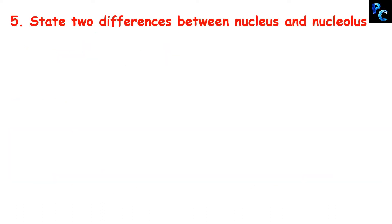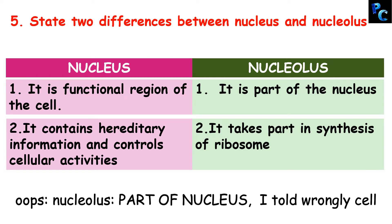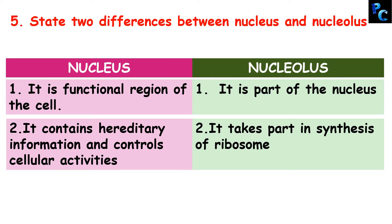Question 5: state two differences between nucleus and nucleolus. The nucleus is the functional region of a cell and is a part of the cell. The nucleus contains hereditary information and controls cellular activities — because it contains chromatin material which forms chromosomes, and within the chromosome DNA is present, and DNA has genes. While the nucleolus takes part in the synthesis of ribosomes, and ribosomes are important because they can synthesize protein.